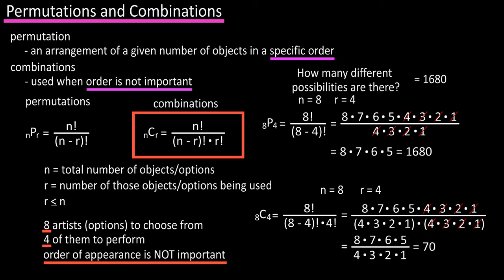The only difference between these formulas is the r factorial in the denominator here in the combination formula. And in combinations, since order of arrangement is not important, the r factorial divides out the duplicates.